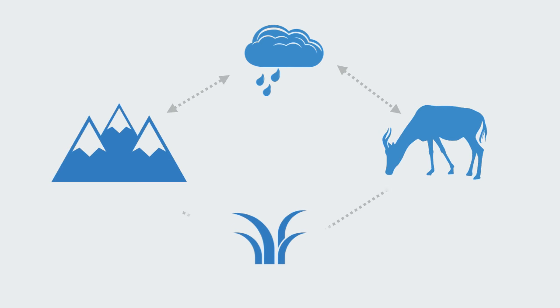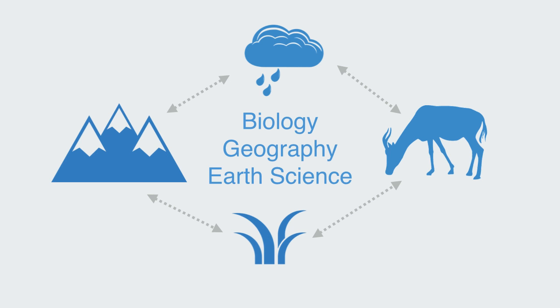Ecology can be understood as the study of ecosystems, which are macroscale systems of interacting biotic and abiotic elements. As such, it is an interdisciplinary science that sits at the intersection of physical and biological sciences, including elements of biology, geography, and earth science.